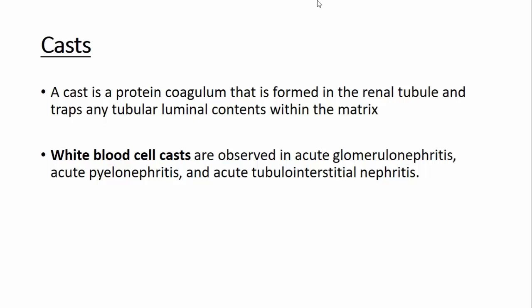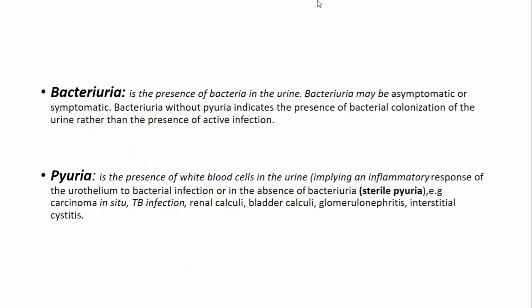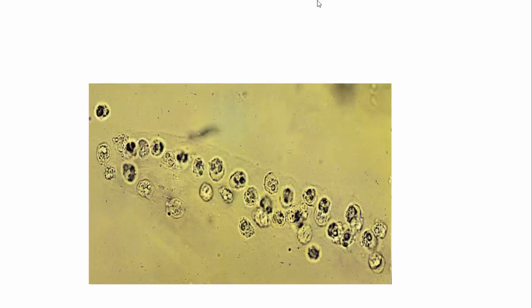One should also know about casts and WBC casts. A cast is a protein coagulum formed in the renal tubule that traps tubular luminal content within its matrix. WBC casts are observed in acute glomerulonephritis, acute pyelonephritis, and acute tubular interstitial nephritis. The most common matrix protein is Tamm-Horsfall protein.